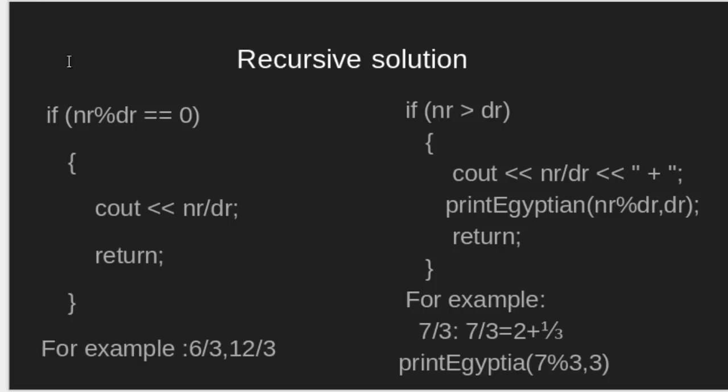This is checking whether numerator is divisible by denominator or not. If divisible, then it is not a fraction. For example, 6 by 3 is 2 and 12 by 3 is 4, which is not a fraction.